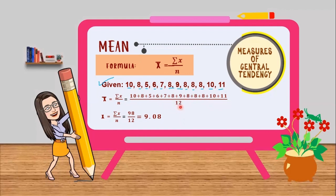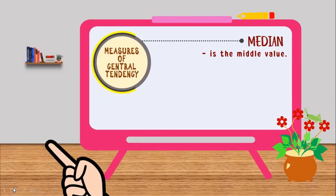So we have 12 here because we have 12 values. Then x equals summation of n equals 98. So we get 98 from the total of these values, and that is over 12 equals, let's divide 98 divided by 12 equals 9.08. So this is the mean of this given values. Next is the median.